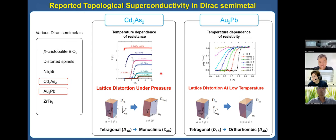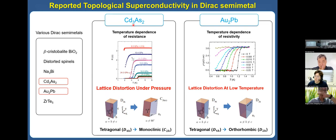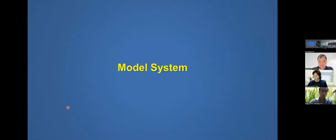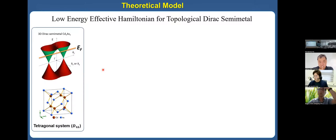So we wanted to study the lattice distortion effect on superconductivity in these two materials. The interesting point is that these two materials share the tetragonal system with time-reversal and inversion symmetry. So our model system is based on their tetragonal system and time-reversal symmetry.